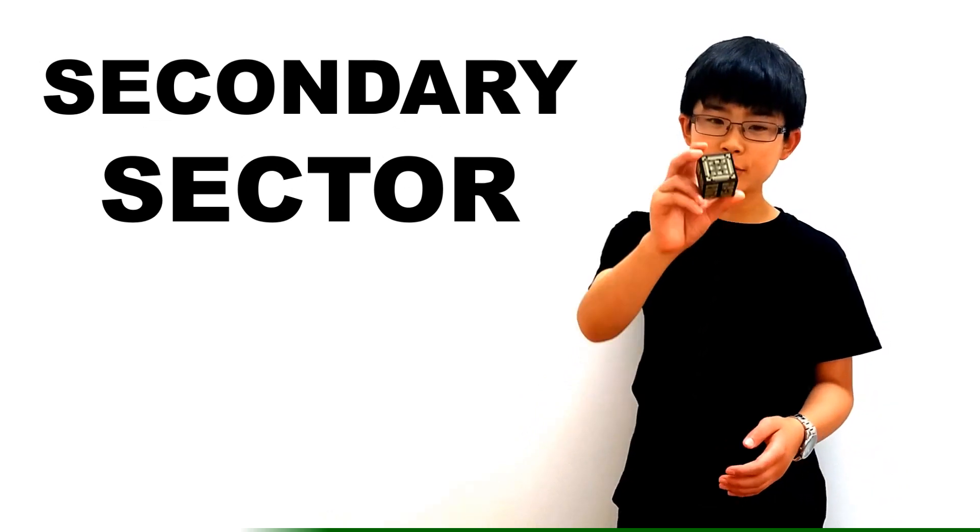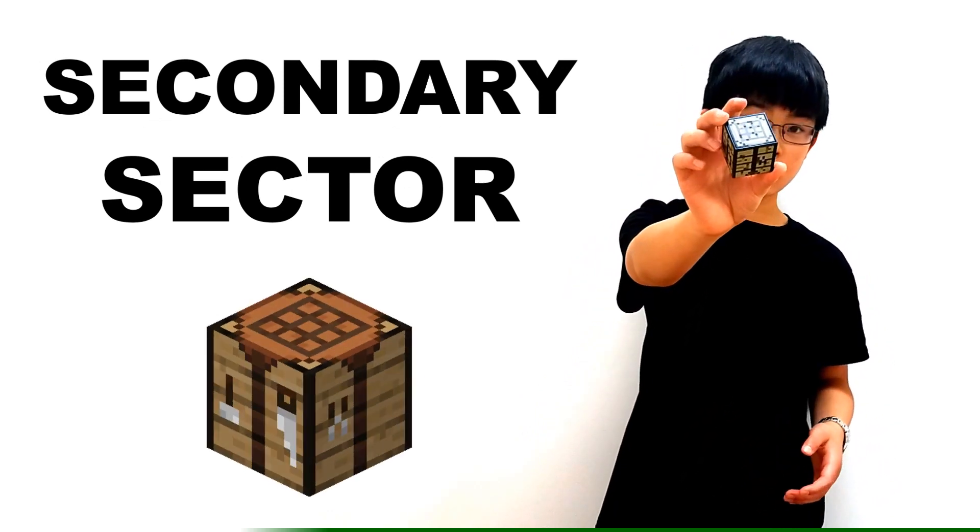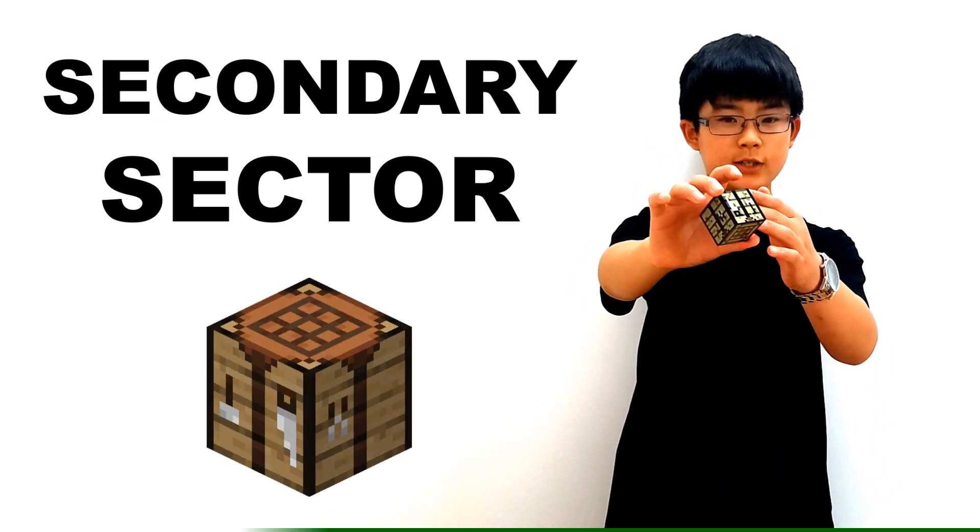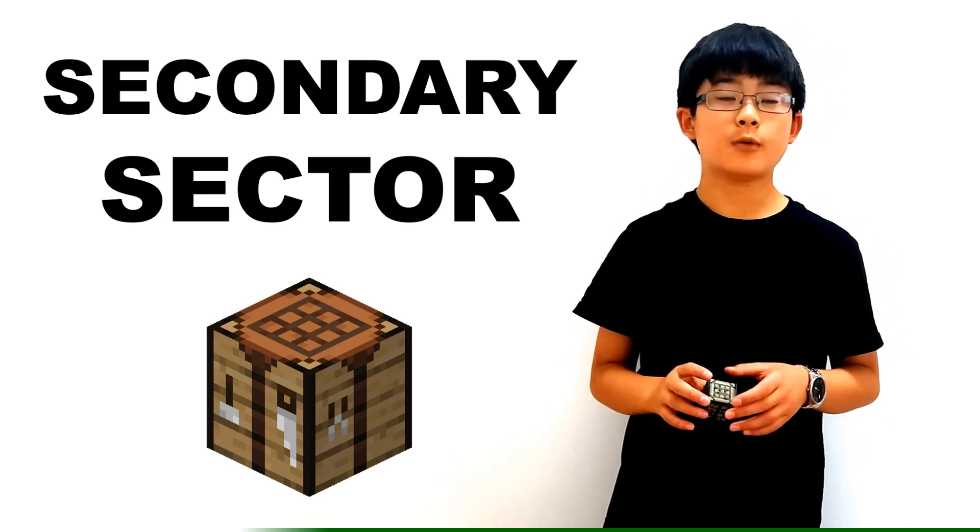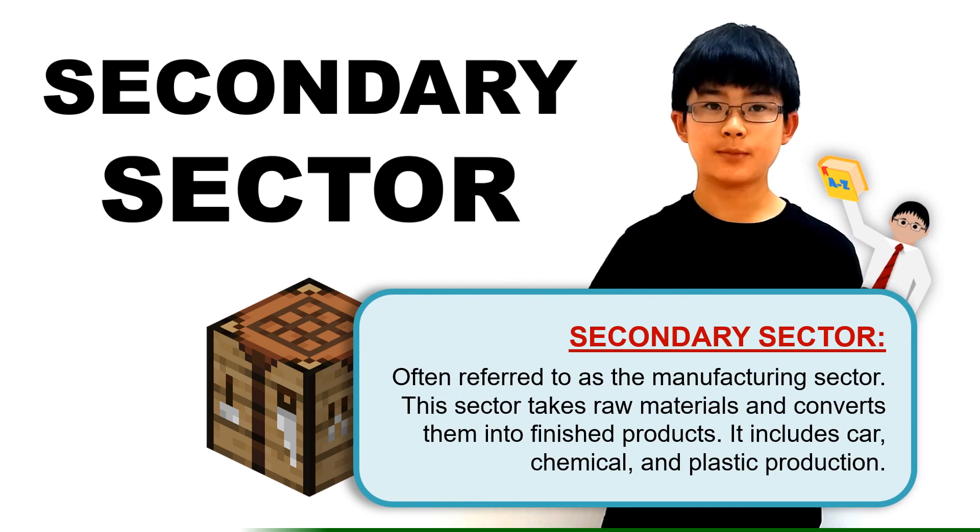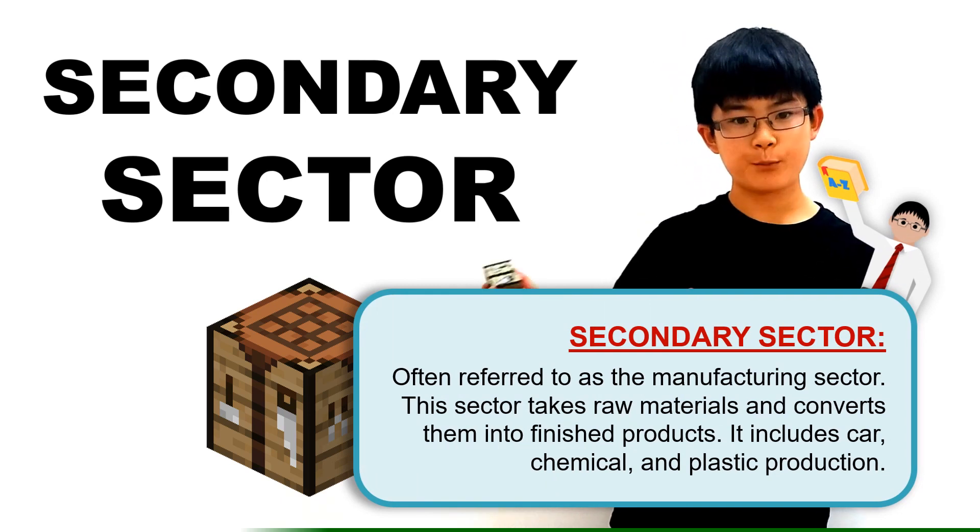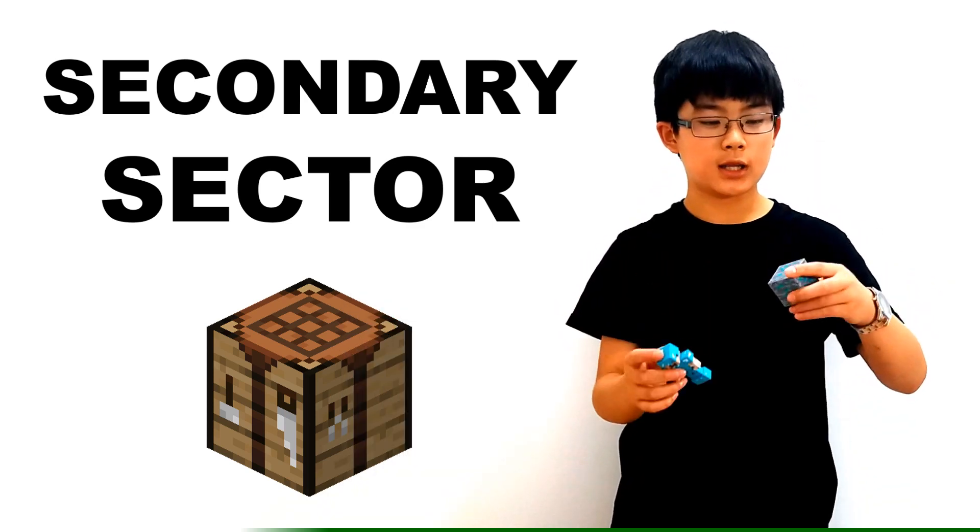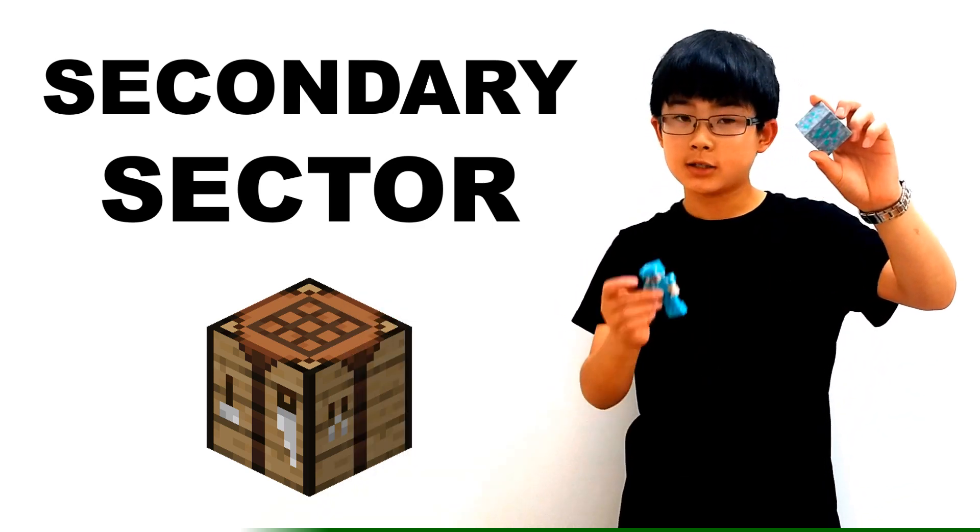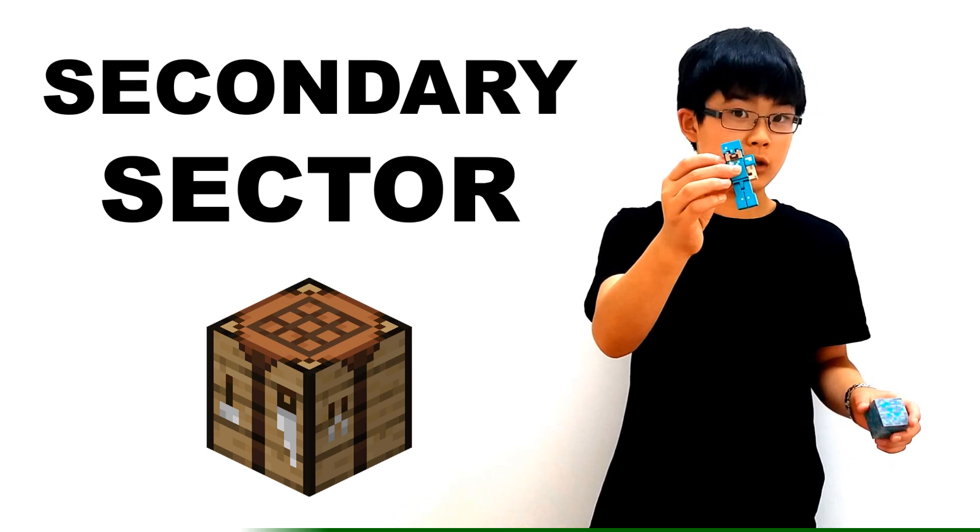Now, if GDP sounds a bit unfamiliar to you, it stands for gross domestic product, which is basically the value of everything that the country produced in one year. Moving on to the secondary sector, I'm going to use this block right here, which is a crafting table from Minecraft, to represent this sector. This is because this sector is often called the manufacturing sector. Because it takes the raw material from the primary sector and converts them into finished products.